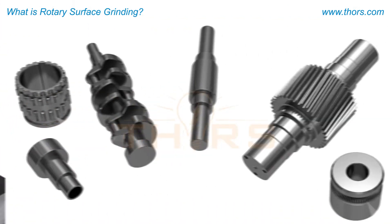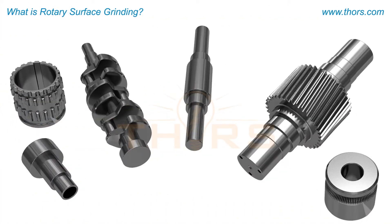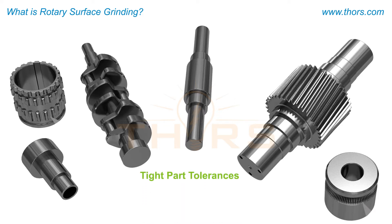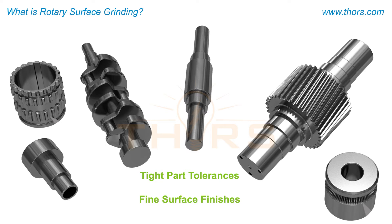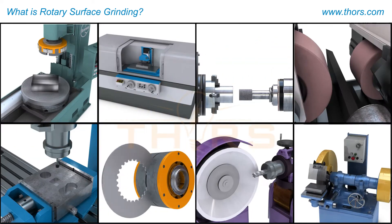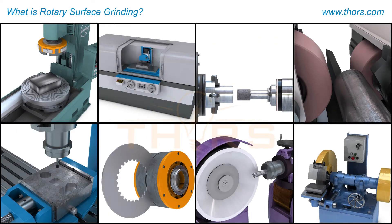For the production of metal parts and products, grinding is used to achieve tight part tolerances and fine surface finishes. Grinding is applied using a variety of methods, so it is important to distinguish between the different types.